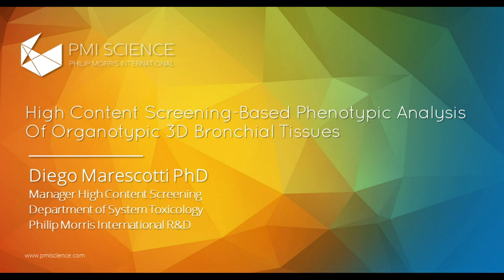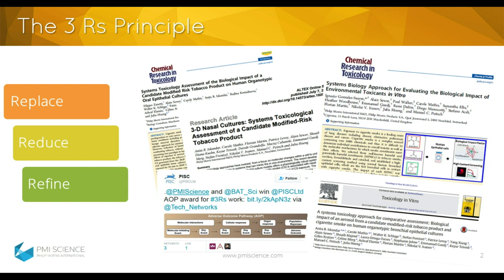Thank you very much for the kind introduction, and please let me thank Thermo Fisher Scientific for giving me the opportunity to talk and describe the work that here at Philip Morris we are doing. To set the context of today's topic, we need to refer to the three R principles which were developed more than 50 years ago, based on the concept of replacement, reduction, and refinement of animal use in science. In scientific fields such as toxicology where harmful substances are tested, 3R implementation has, in the last 10 years, become a major objective.